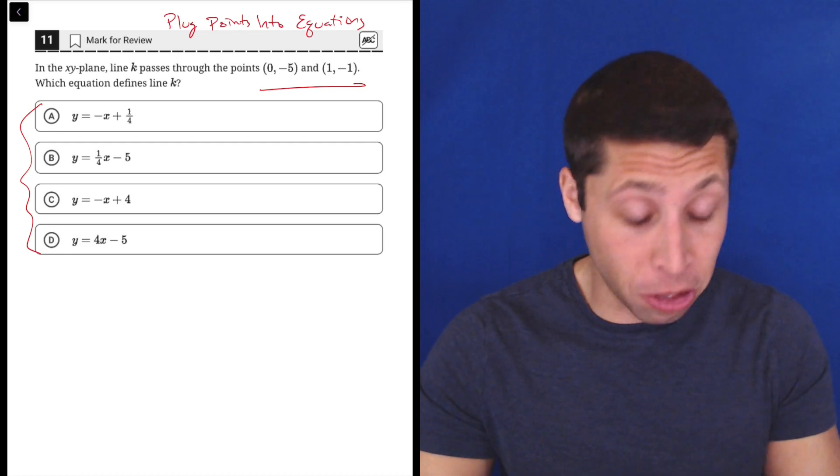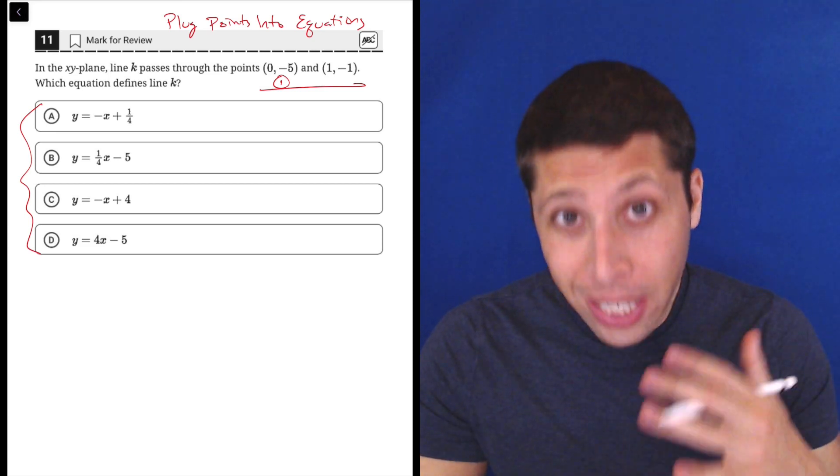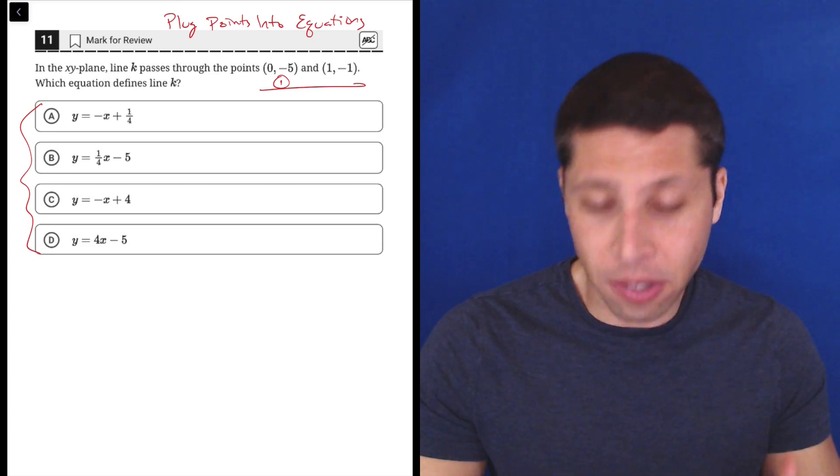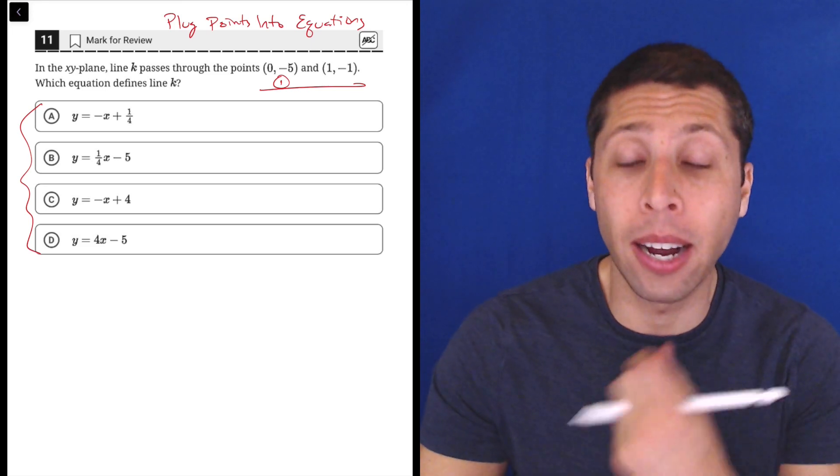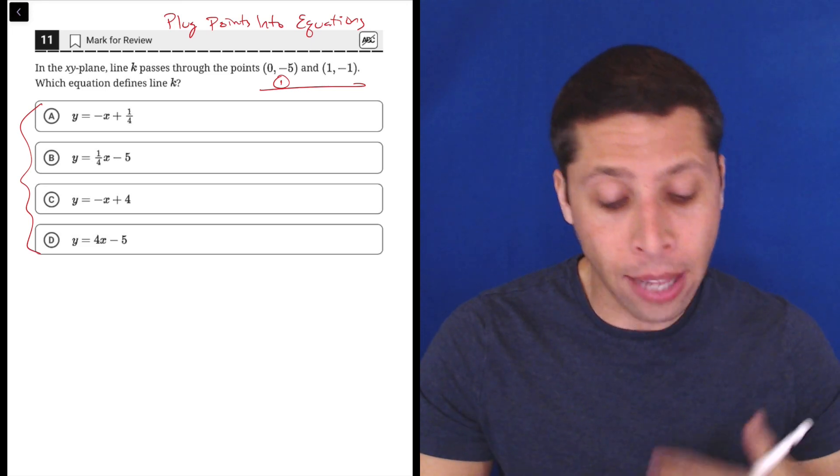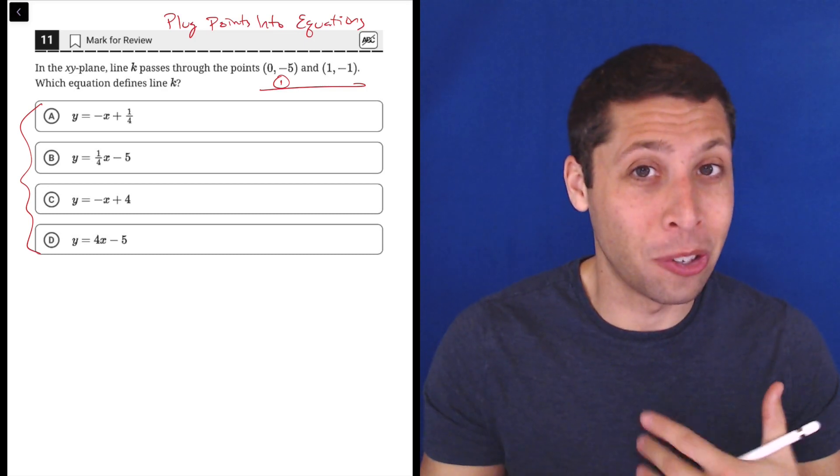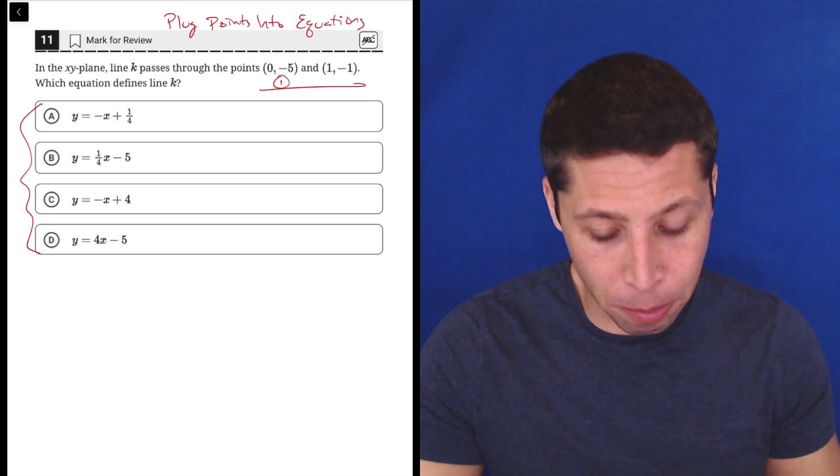Let's start with the easier point (0, -5), because 0 is a really easy number to plug into things. Some of you may be looking at these equations and recognize that they fit the y = mx + b format of a line, and the b is the y-intercept, which is where x is always equal to 0. So they're kind of giving us the y-intercept. But even if you have no idea what I'm talking about, you still know how to plug 0 in.